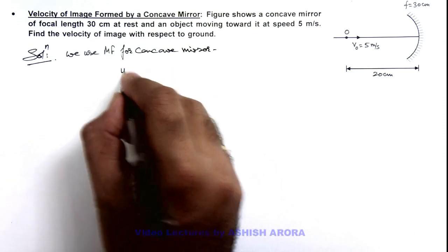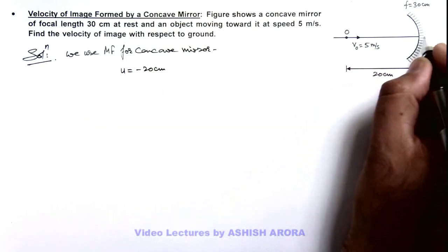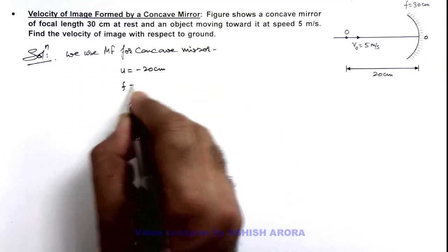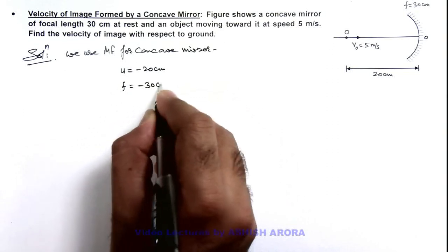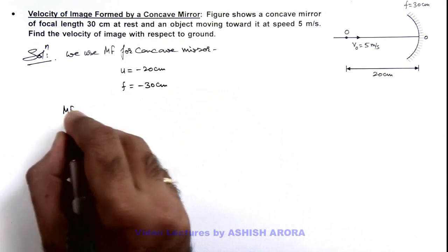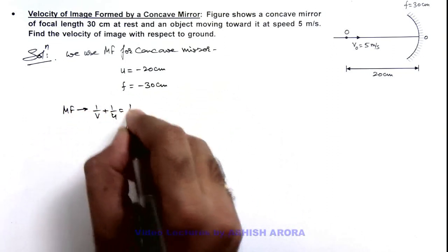We can write object distance u is minus 20 centimeter because I am taking this pole as origin, and here the focal length can also be taken as minus 30 centimeter. And mirror formula is given as 1 by v plus 1 by u is 1 by f.